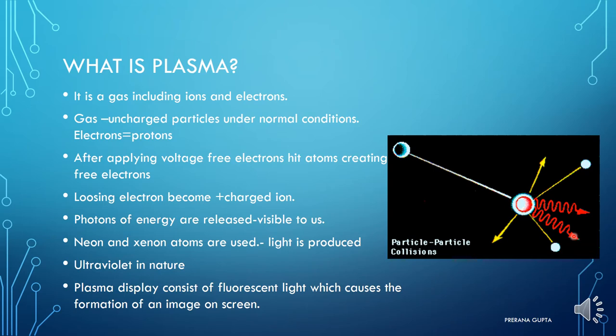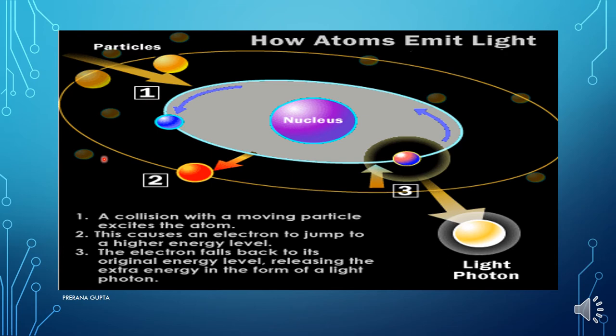When an electron is lost, then a positively charged ion forms. If one electron is lost then it will be plus one, and if two electrons are lost then it will be plus two. Photons of energy are released, normally invisible, but if there is a gas which we have put with an organic color, then it will generate light that is produced and visible to us.